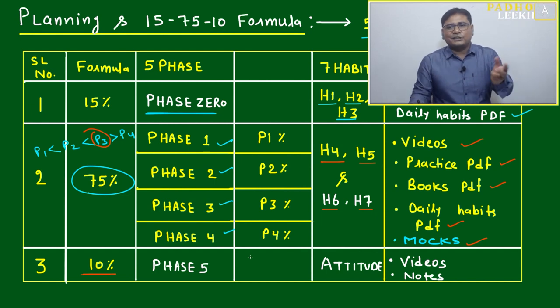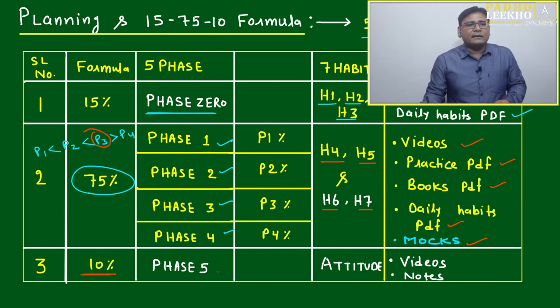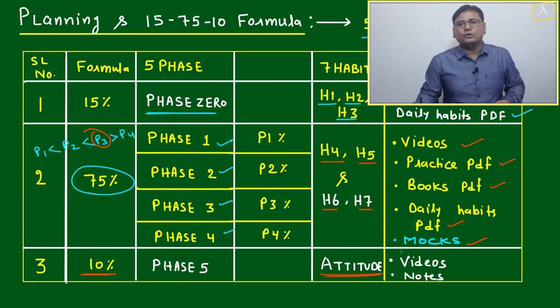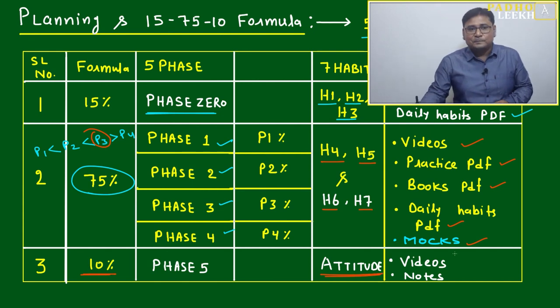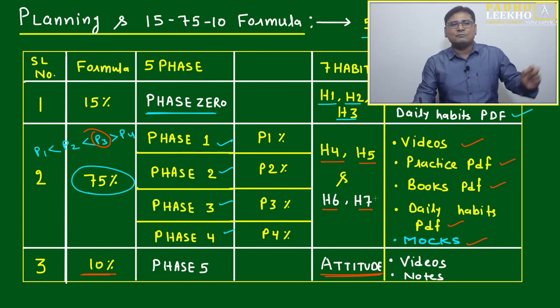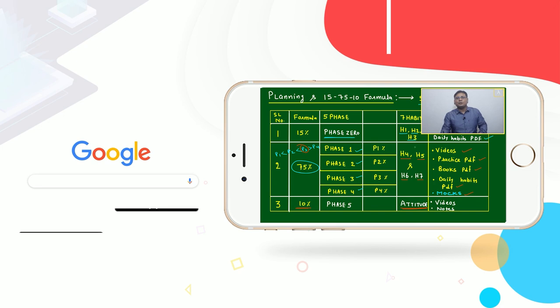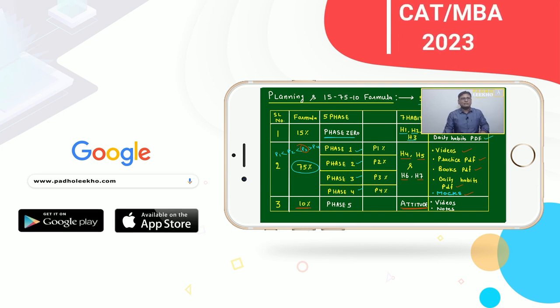Phase Five will be done in this 10%. Here, the habit will develop a good attitude to get success—a good attitude because all we have done to get success we have done in the last 90%. Here, videos will be there, notes will be there, and revision will be there. All these things will move forward.